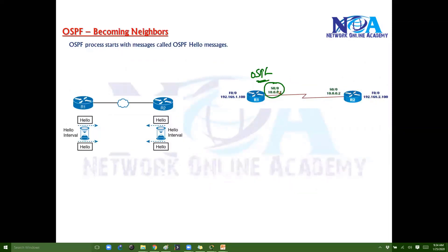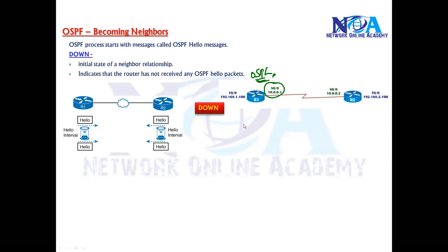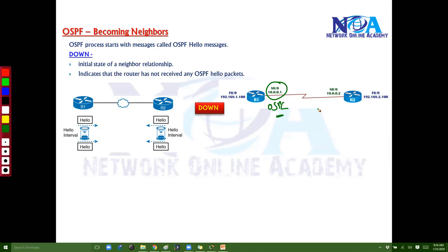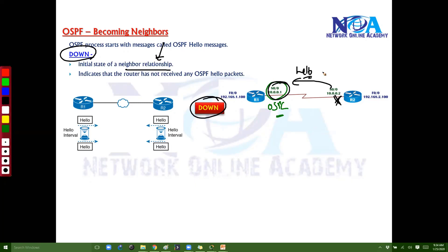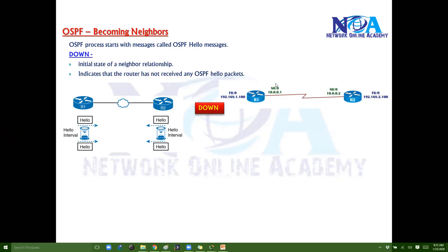Whenever you configure OSPF on a particular router, it will start sending hellos. But before it starts, let's say you've configured OSPF on one side and not on the other. This stage is called the Down state - an initial neighbor relationship state where both routers are completely strangers, or it indicates that no hellos are being received from the neighbor. Maybe OSPF is not configured, there's a problem with the link, or the neighborship was established but the link went down.